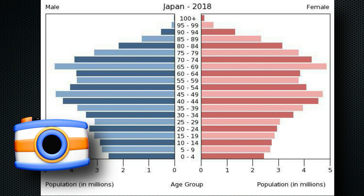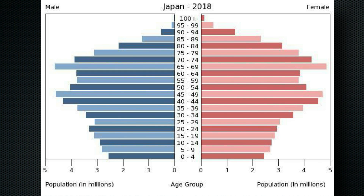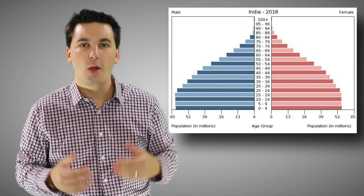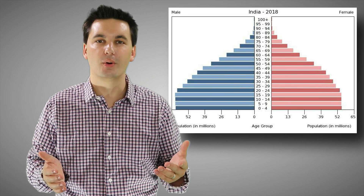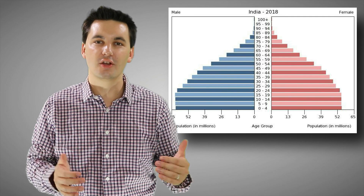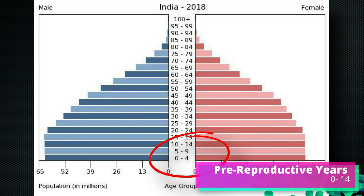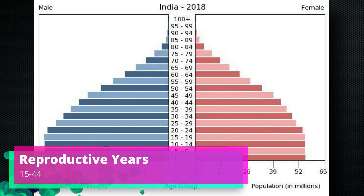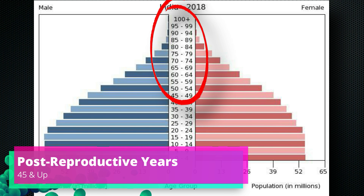It's important to note this is a snapshot in time, so always look at the date when examining a population pyramid — we're only recording the current population breakdown at that moment. When looking at the y-axis, we can break it into different cohorts: the pre-reproductive years (ages 0–14) at the bottom, the reproductive years (ages 15–44) in the middle, and the post-reproductive years (45 and up) above that.